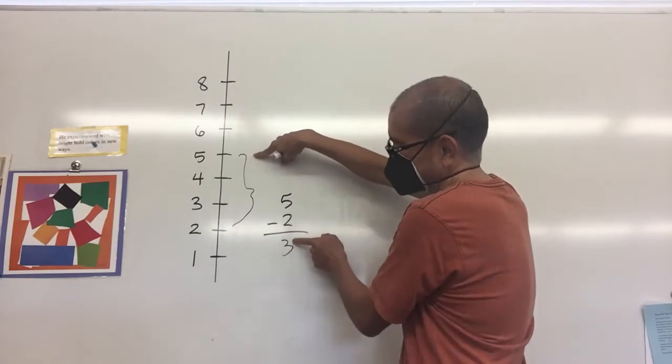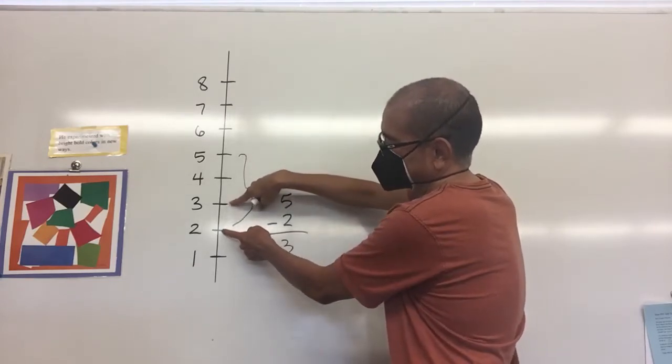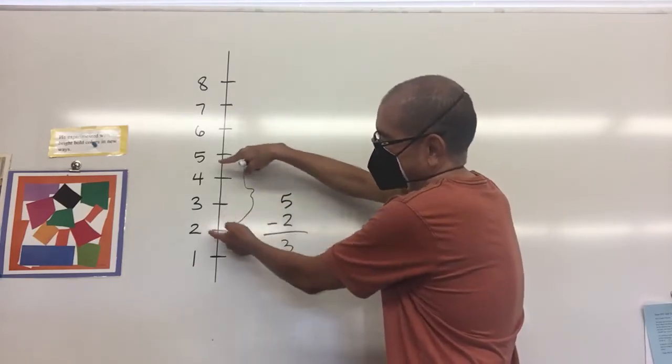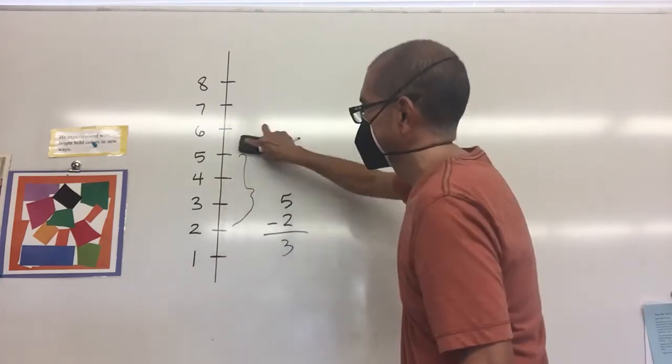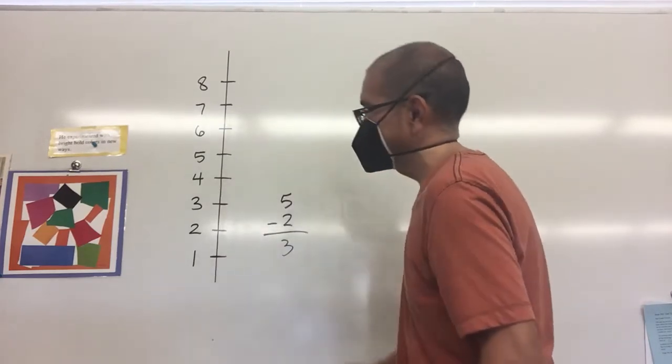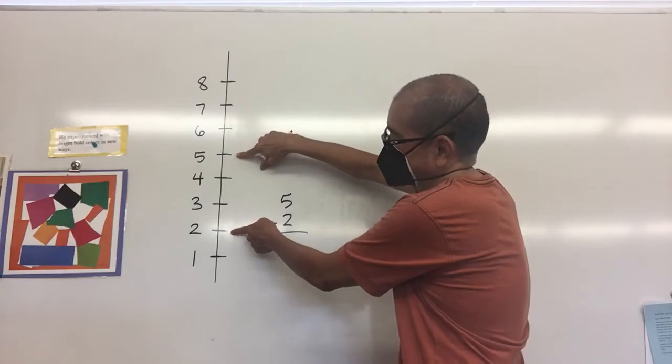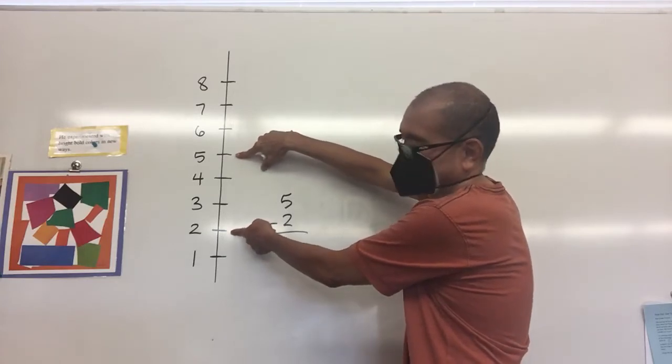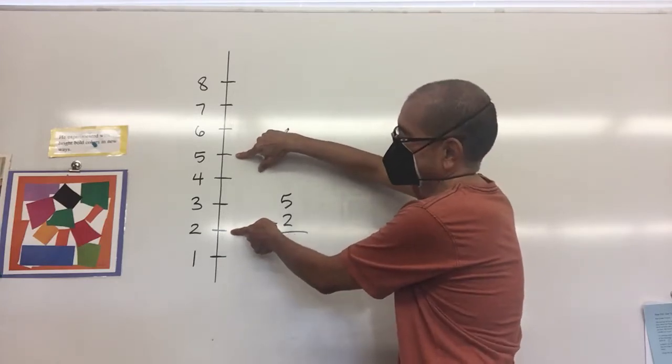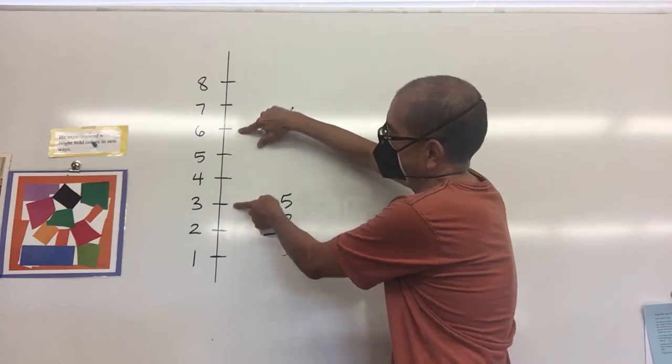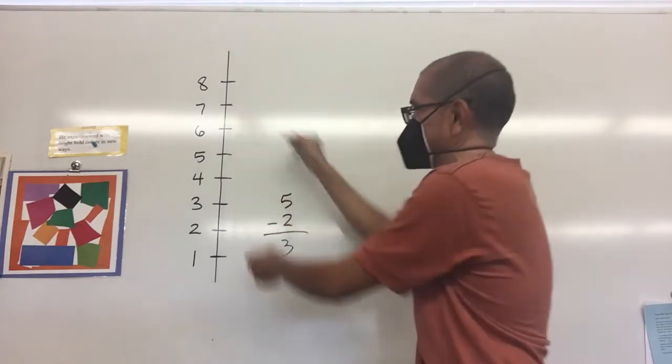If we have 5 minus 2, that is actually 3 representing the distance or the space in between 5 and 2. Now what happens if I were to take 5 and 2 and shift it up two spots? I would get 7 minus 4.